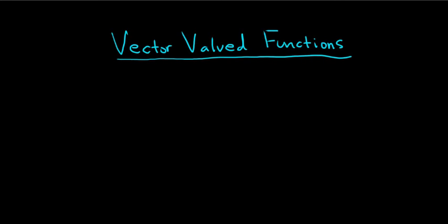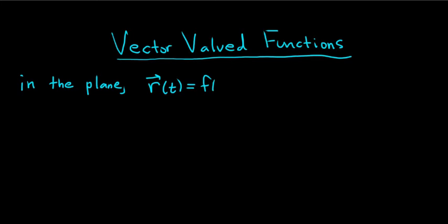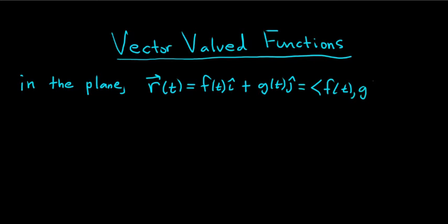Let's look at two basic examples. First, in the xy-plane, a vector-valued function would have the following form: r(t) — with a little arrow above the r — equals f(t) î plus g(t) ĵ. This is written using the i-j notation, where i and j are unit vectors. You can write this in component form using angle brackets: ⟨f(t), g(t)⟩.